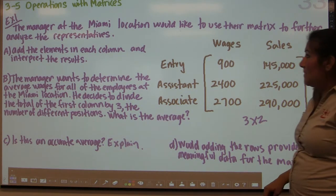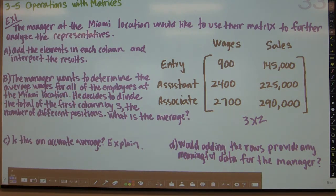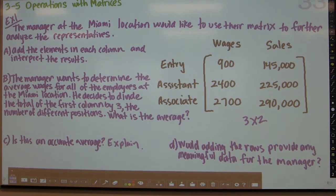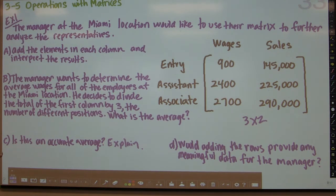So in this example, relating back to page 171 in the textbook, there is a coastal sales company with three locations in Florida. The matrices below show the average daily wages and annual sales of all the representatives — Miami, Tampa, and Tallahassee locations. This is the opening storyline for the chapter. When it says the manager at the Miami location, they're talking about taking one of those matrices and focusing on just that one. In this example we're just focusing on the Miami location.